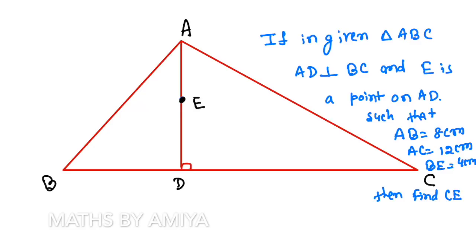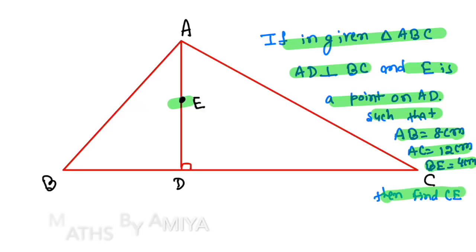Anyway, this was the question in front of you. You have triangle ABC where AD is perpendicular to BC and E is a point on AD such that AB is 8 cm, AC is 12 cm, BE is 4 cm, then find CE.